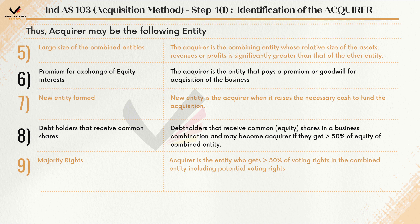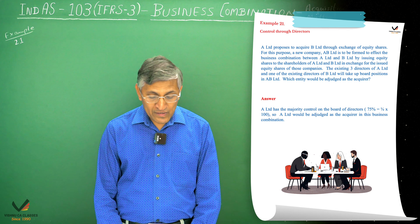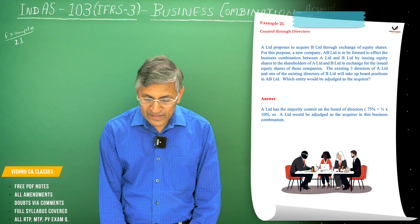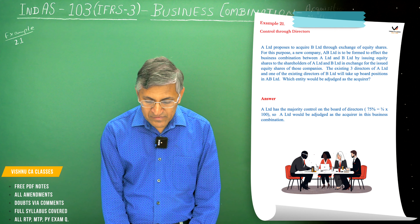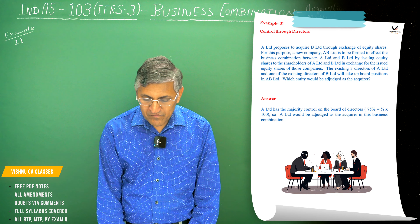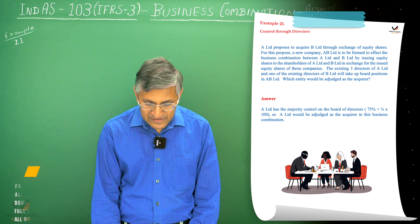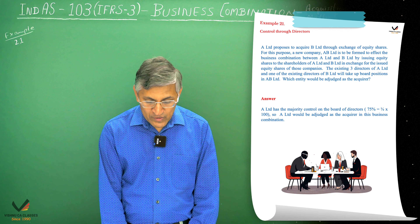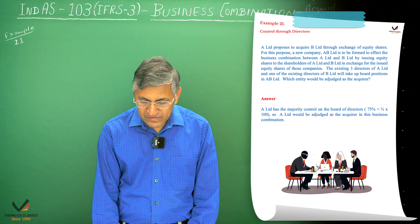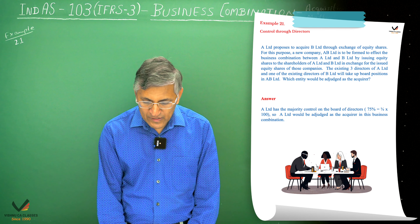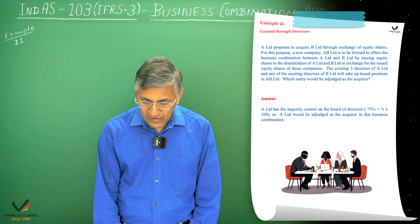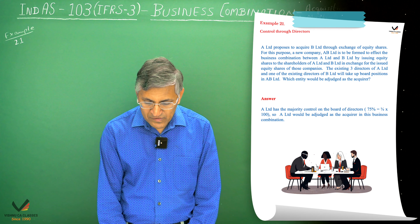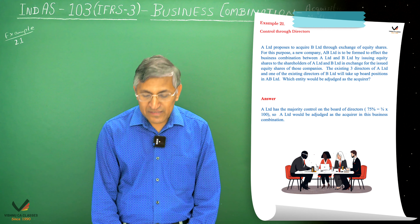Let us start with Example No. 21. In this example, it is a given character. A Limited proposed to acquire B Limited through exchange of equity shares. For this purpose, a new company AB Limited is to be formed to effect the business combination between A Limited and B Limited by issuing equity shares to shareholders of A Limited and B Limited in exchange for the issued equity shares of both companies. The existing three directors of A Limited and one of the existing directors of B Limited will take up board positions in AB Limited.